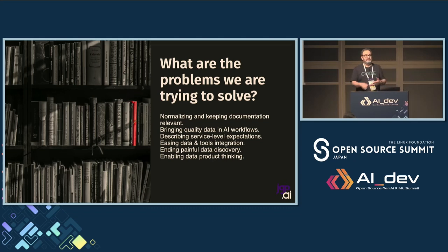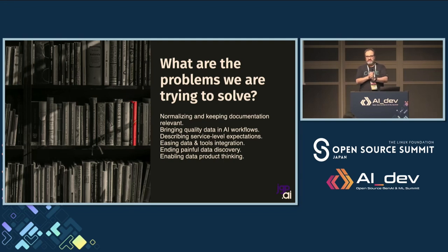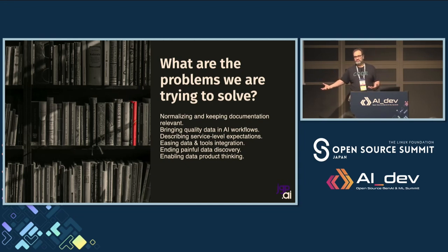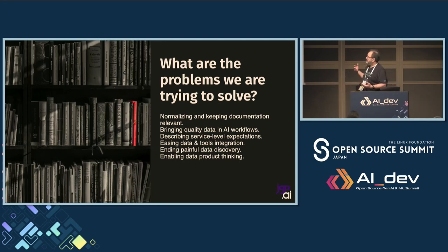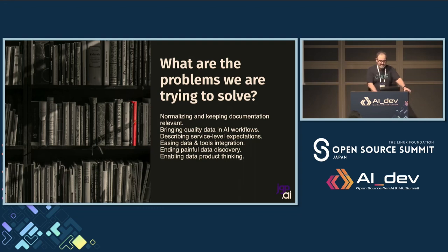One problem it solves is an upstream schema change. You've got a data producer producing according to a schema. If the producer changes the schema, how do you know it's actually a change if you don't have a source of truth for your metadata? Basically, this is all about bringing data quality, guaranteeing SLAs, and enabling data product thinking — which is very dear to my heart.